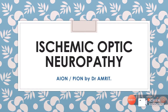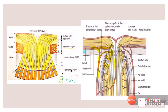Under the heading of Ischemic Optic Neuropathy, we will be studying AION — Anterior Ischemic Optic Neuropathy — and PION — Posterior Ischemic Optic Neuropathy. In order to understand these conditions, the anatomy of the optic nerve is very important.